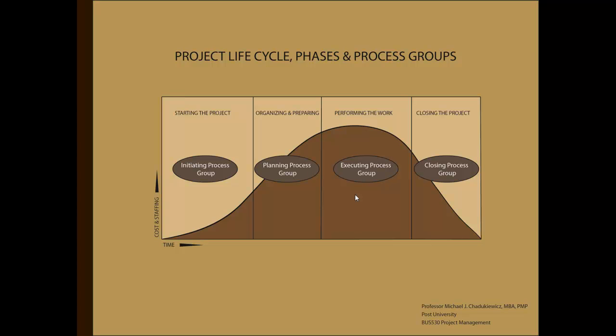Within each stage of the life cycle, various processes are performed. The PMBOK refers to these processes as process groups. The process groups align in both name and function with the stages of the life cycle. The diagram shows four process groups: initiating process group, planning process group, executing process group, and closing process group.